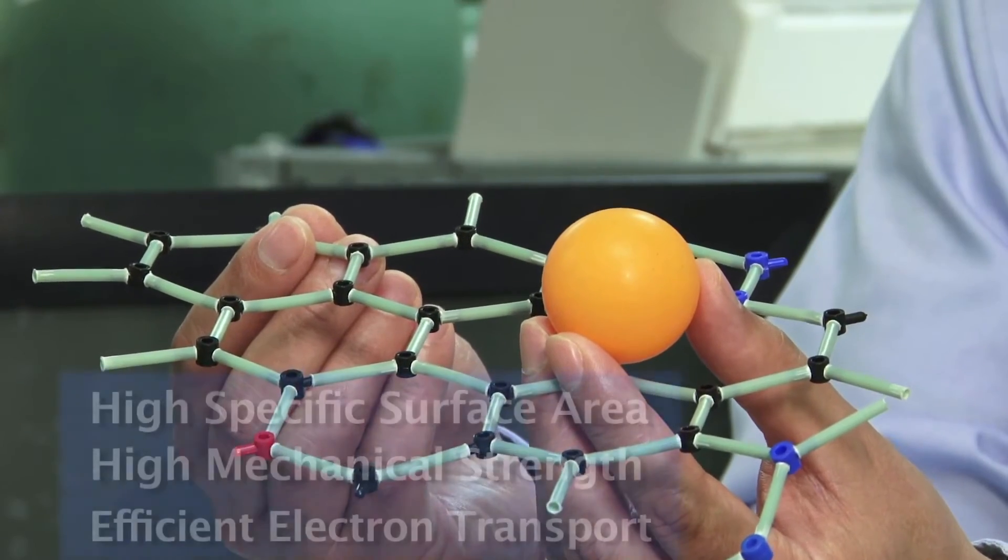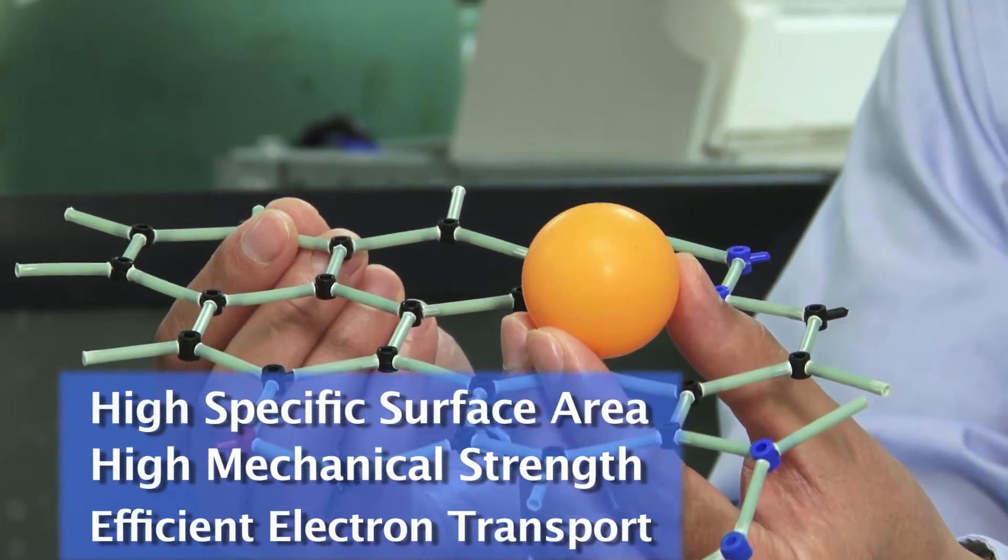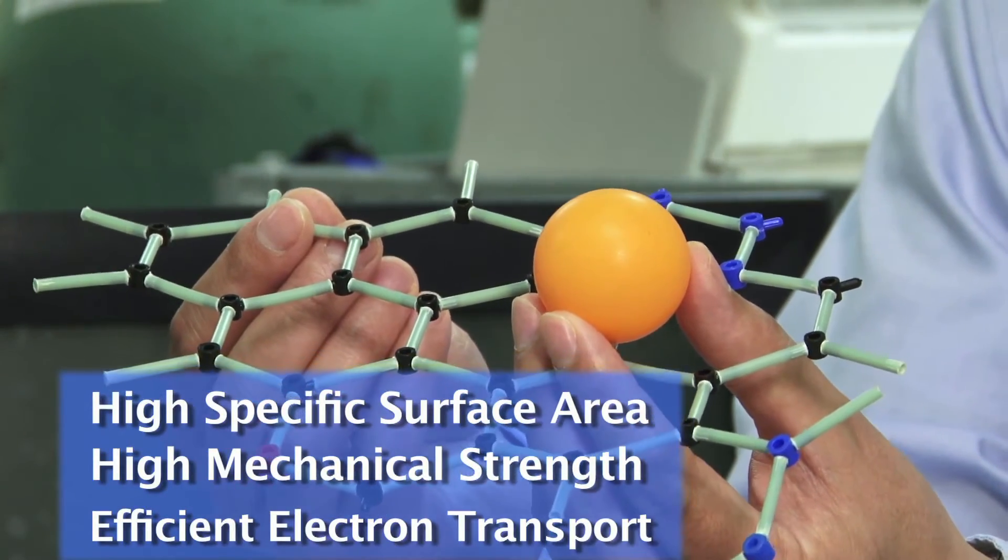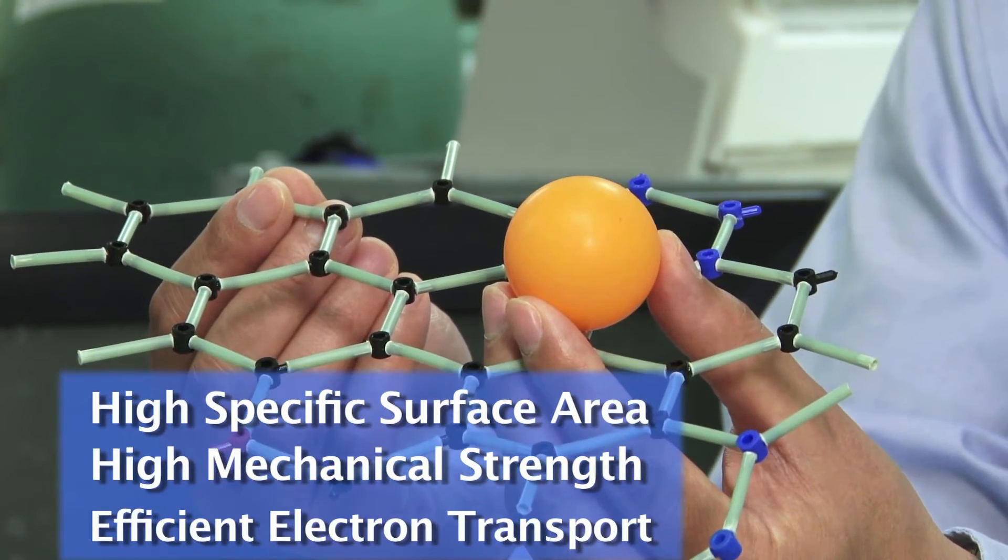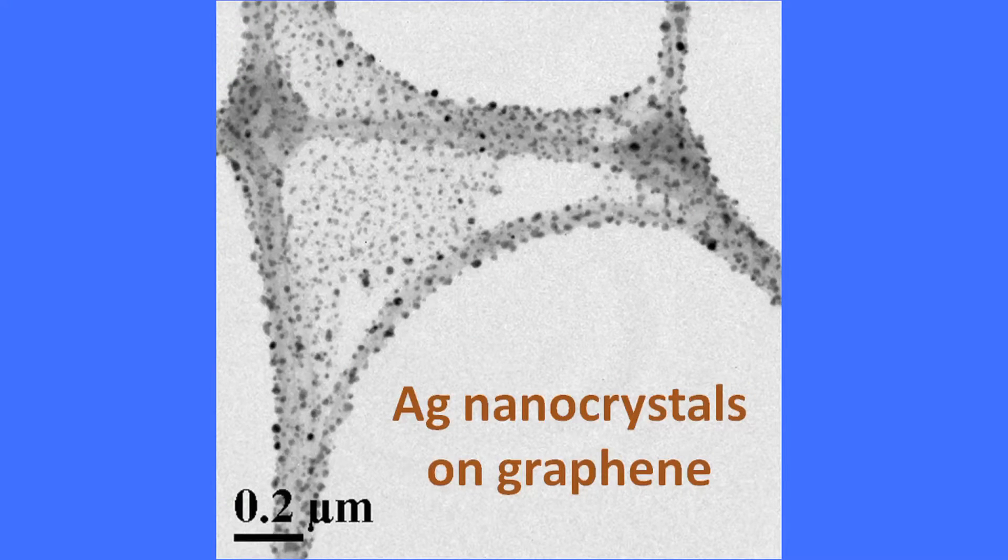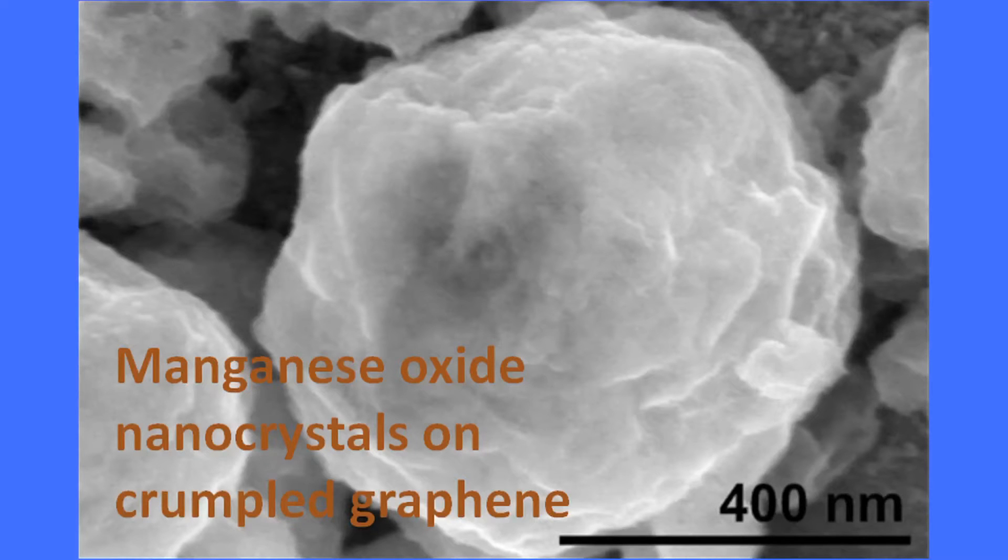It has very high specific surface area, high mechanical strength, and more importantly electrons can transport very efficiently through this material. So our vision is to combine this graphene sheet with nanocrystals of different materials to form this synergistic structure. I call it hybrid nanostructure. For this structure, we could utilize not only the unique properties of nanocrystals and those of graphene, but also additional properties due to the interaction between the nanocrystals and the graphene.